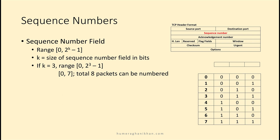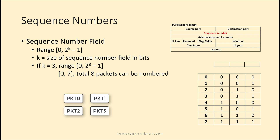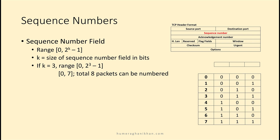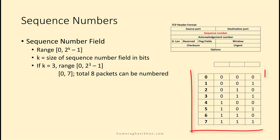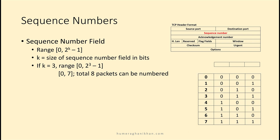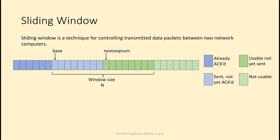If the sequence number field is two bits long, it can represent four different values, so we can number our packets zero, one, two, and three. If it is three bits long, it can represent eight different values, numbering packets zero to seven. The total range of packet numbers can be computed by 2^k, where k is the number of bits used in the sequence number field.